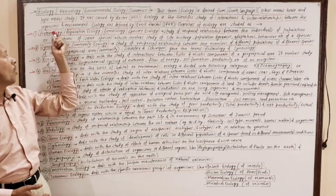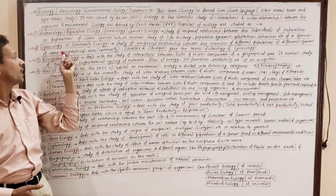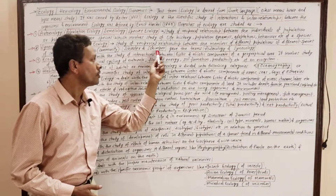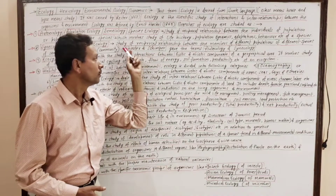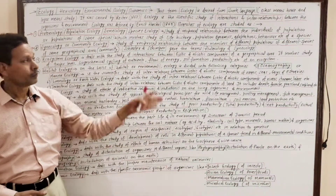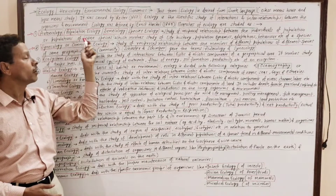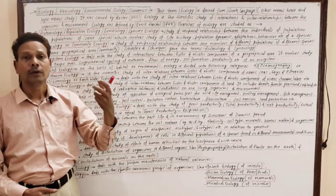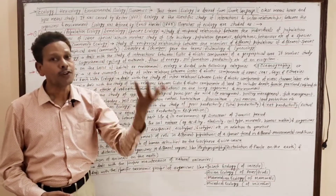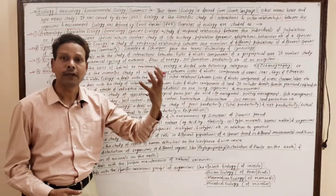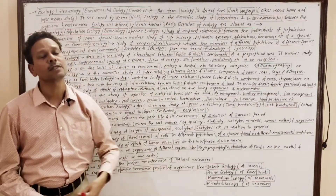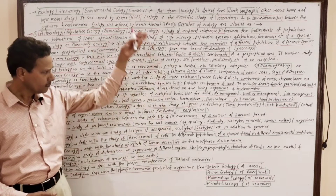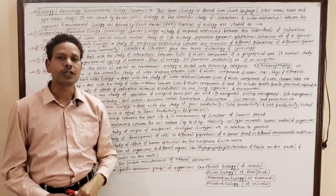Autecology is the study of a single population, while synecology — both terms given by Schroter and Schimper — is the study of interactions and interrelationships of organisms of different populations and different species that deal with a community. These are some of the branches of ecology.